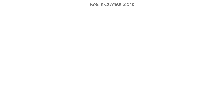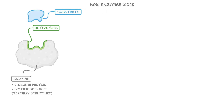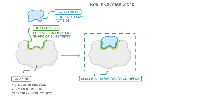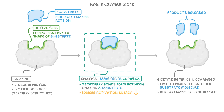Let's look at how enzymes work. To do this, we need to understand the structure of enzymes. Enzymes are globular proteins, which means they have a specific three-dimensional shape known as a tertiary structure. This structure includes an active site, which is a specific area where the substrate fits. The substrate is the molecule that the enzyme acts on. Because the active site and substrate fit together, we describe the shape of the active site as being complementary to the shape of the substrate. When a substrate binds to an enzyme's active site, they form what's called an enzyme-substrate complex. Temporary bonds form between the enzyme and the substrate, lowering the activation energy needed for the reaction. Then after the reaction, the products are released. Because the enzyme remains unchanged, it's free to bind with another substrate molecule and catalyse another reaction, allowing enzymes to be reused over and over again.